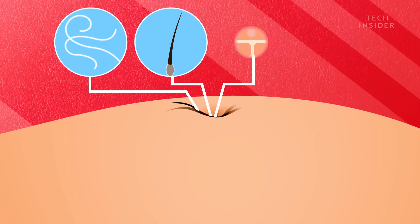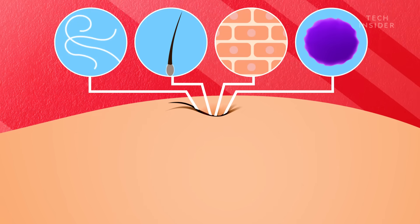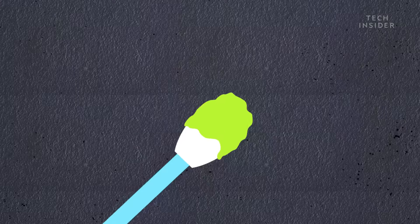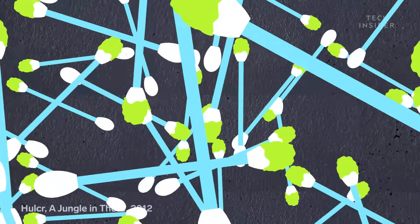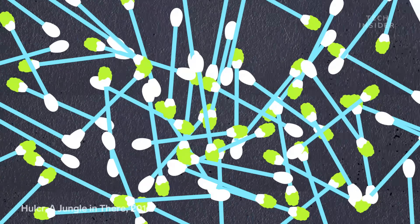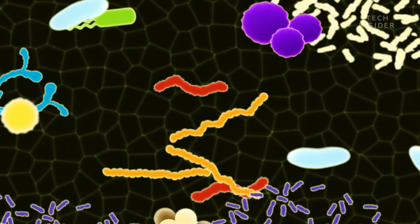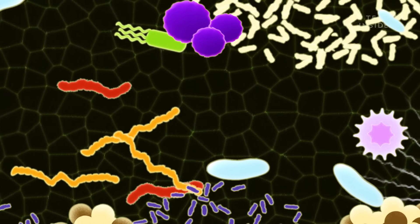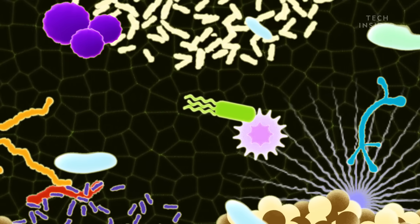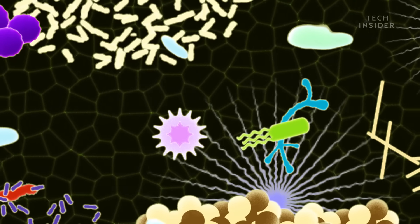Not only by lint, hair, and dead skin cells, but also by bacteria. In one study, 60 volunteers swabbed their belly buttons. Researchers then analyzed the samples and found more than 2,300 kinds of bacteria. That's an average of 67 different kinds per belly button.